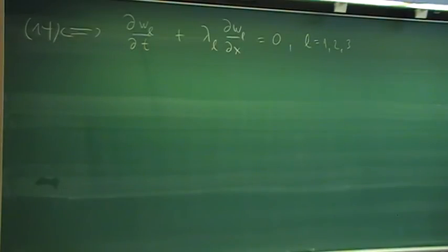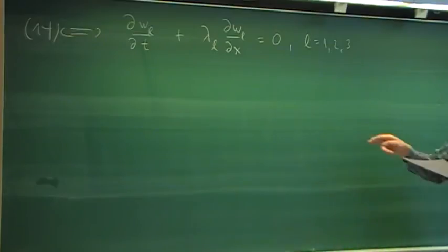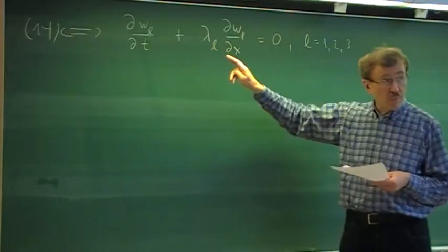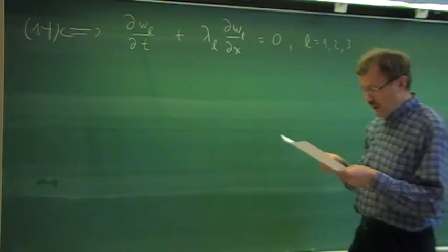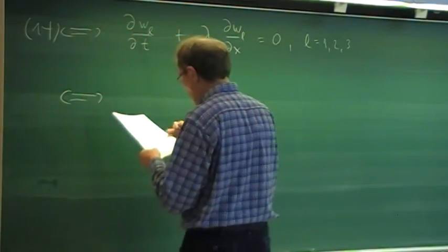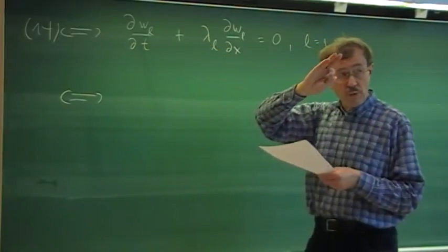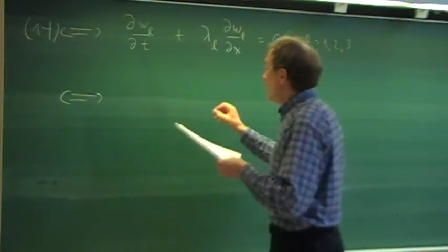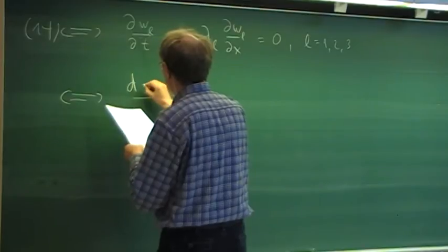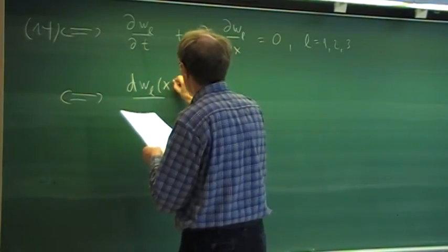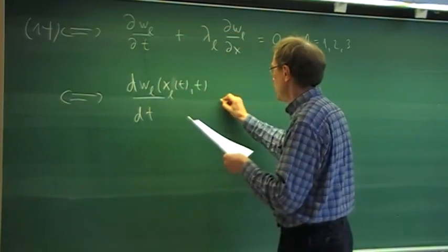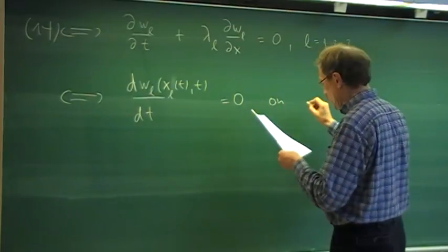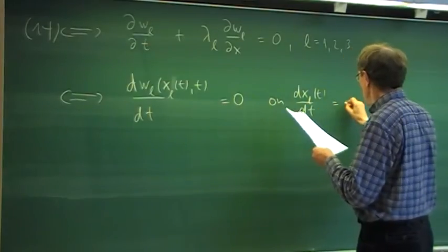We can play the same trick as we did for the scalar conservation laws, where f'(u) was the characteristic speed. Here we have something similar — we can use the characteristics to simplify the equations. If we are on a characteristic with slope lambda_L, which is u minus c, u, or u plus c, then the total time derivative of the L-th characteristic variable on the characteristic x_L(t) with respect to t equals zero, on the characteristic dxL/dt equal to lambda_L.